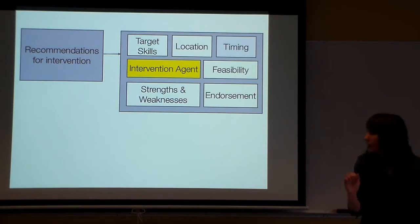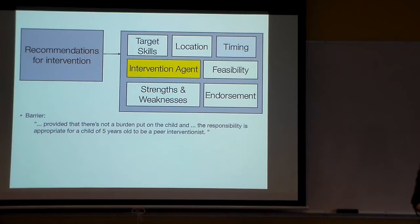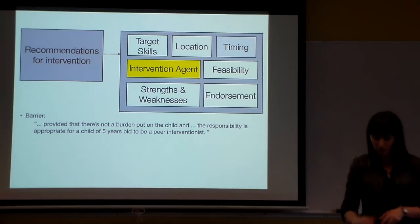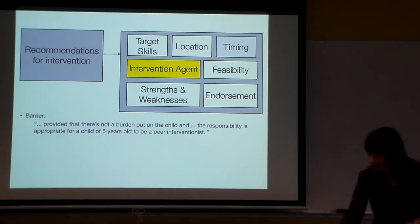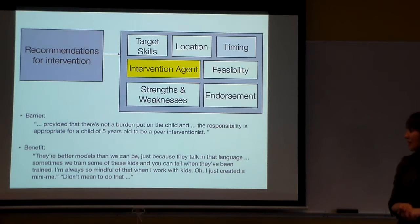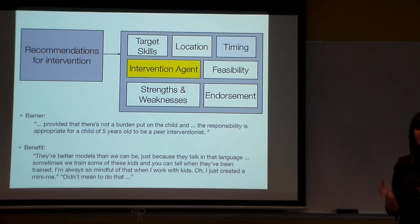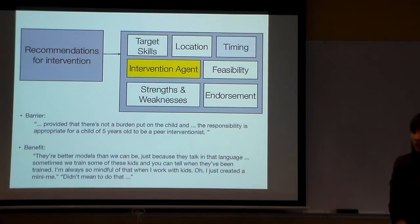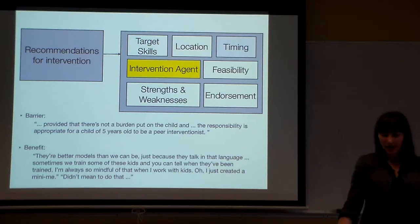One of the barriers people noted is that there's a concern about putting burden on the child — are we asking them to do too much? In terms of benefit, one behavioral interventionist noted: 'There are better models than we can be just because they talk in that language. Sometimes we train some of these kids and you can tell they've been trained — I'm so mindful of that: I just created a mini-me.' You can probably think of experiences where you've used a really adult-level phrase and then the child with autism is repeating something back that would really not be appropriate when talking to their friends.